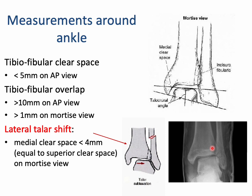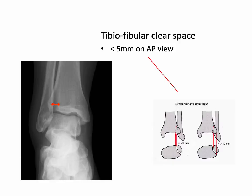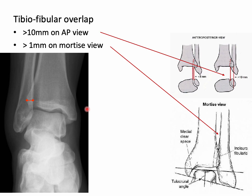The tibio-fibular clear space is the space seen between the tibia and fibula, usually less than 5 mm on AP view, measured about a centimetre above the distal tibial articular surface. Tibio-fibular overlap is the amount of overlapping tibia and fibula on AP, usually greater than a centimetre on AP projection, measured in the same spot. The lateral talar shift is when there is a medial clear space greater than about 4 mm.